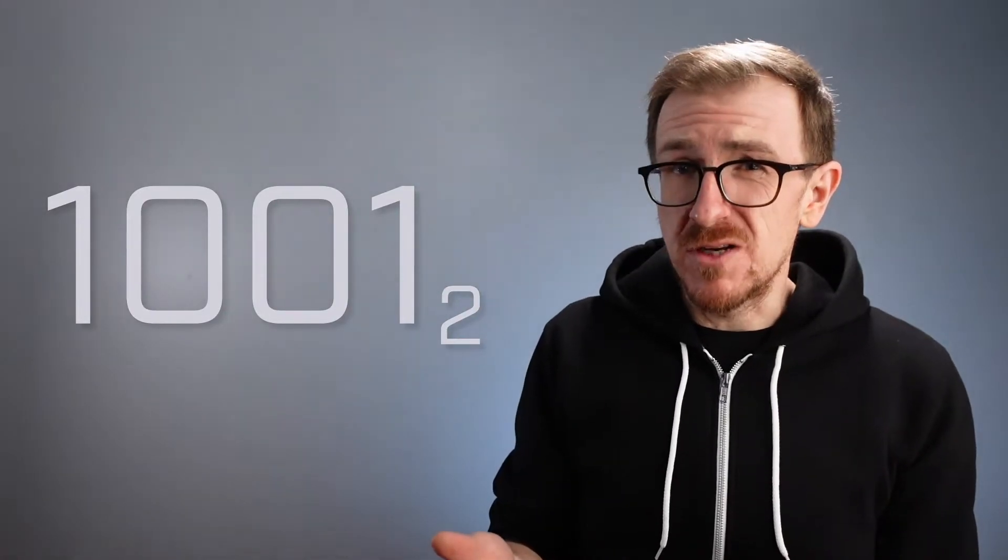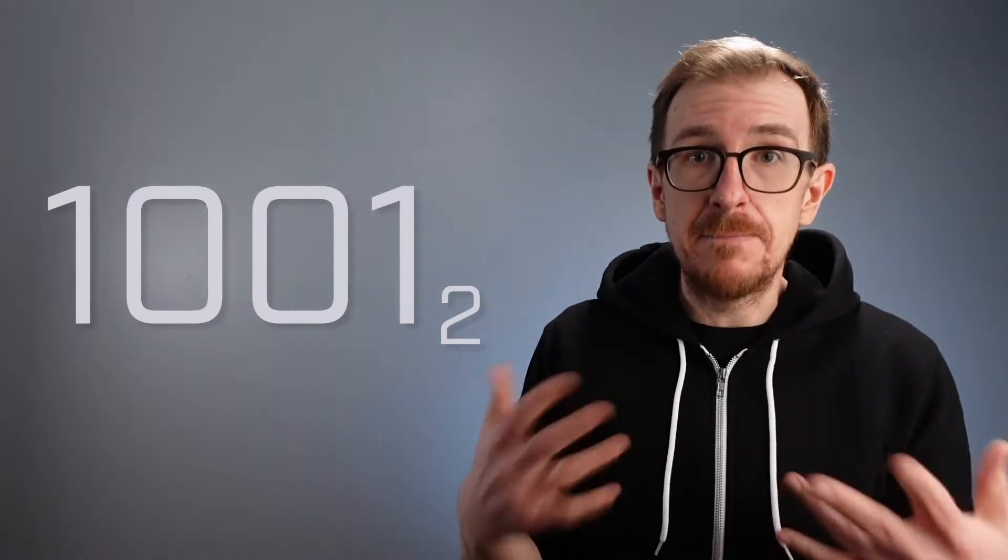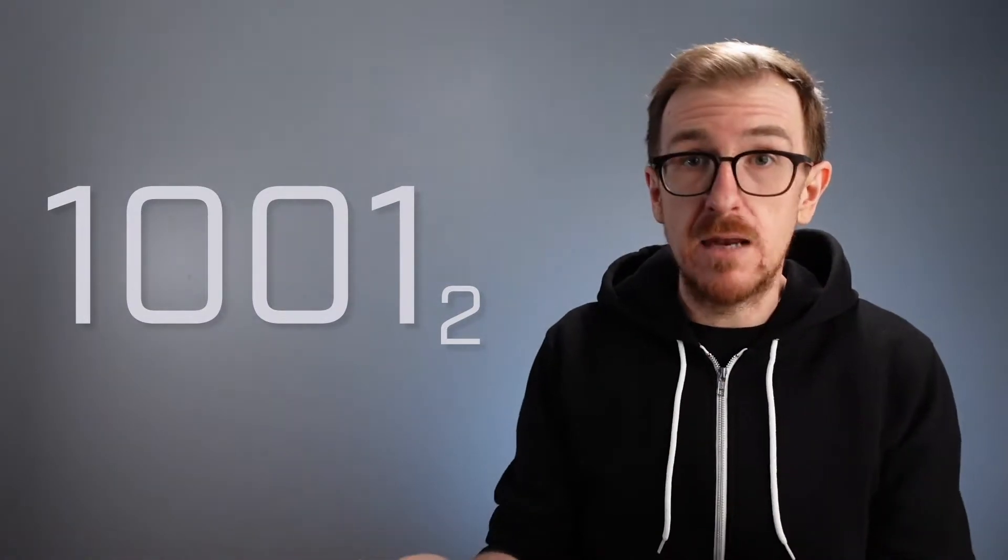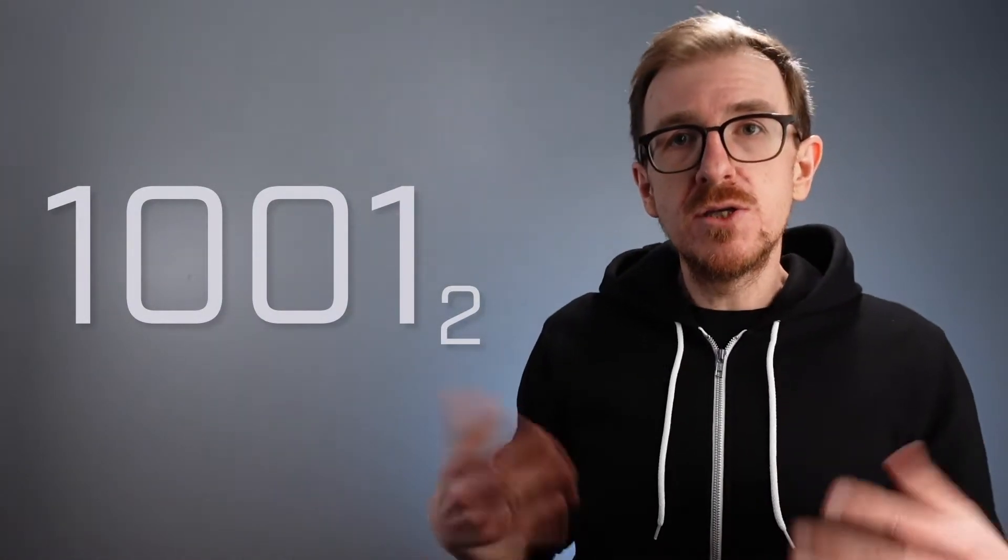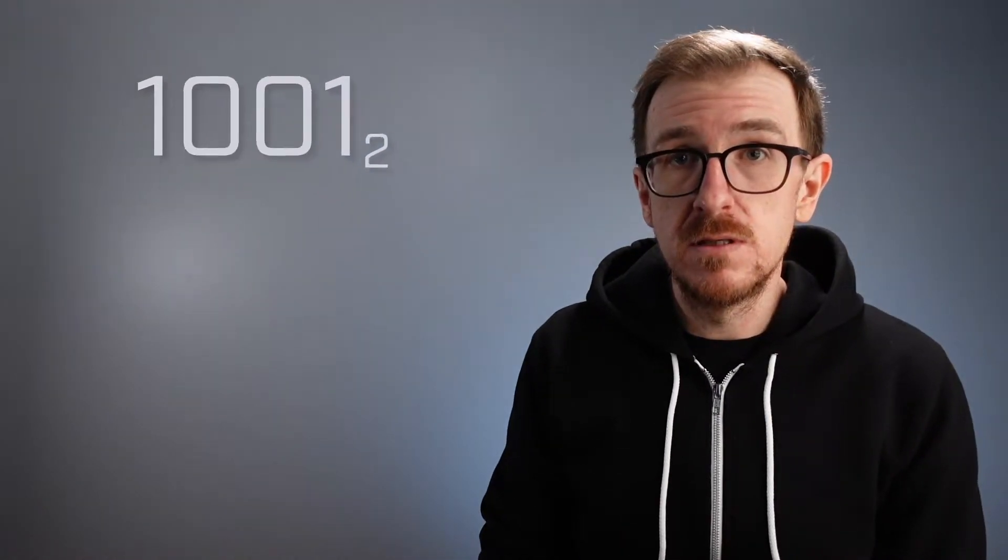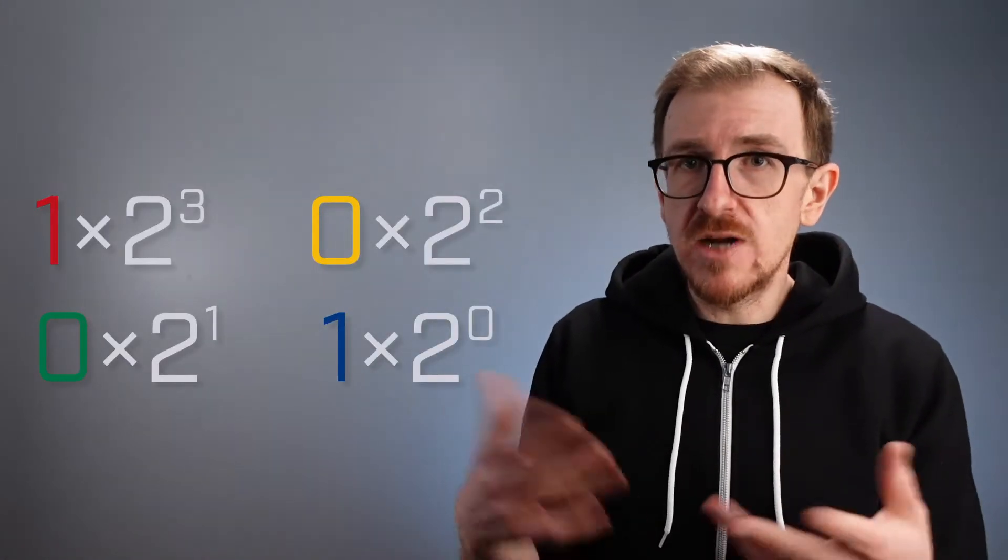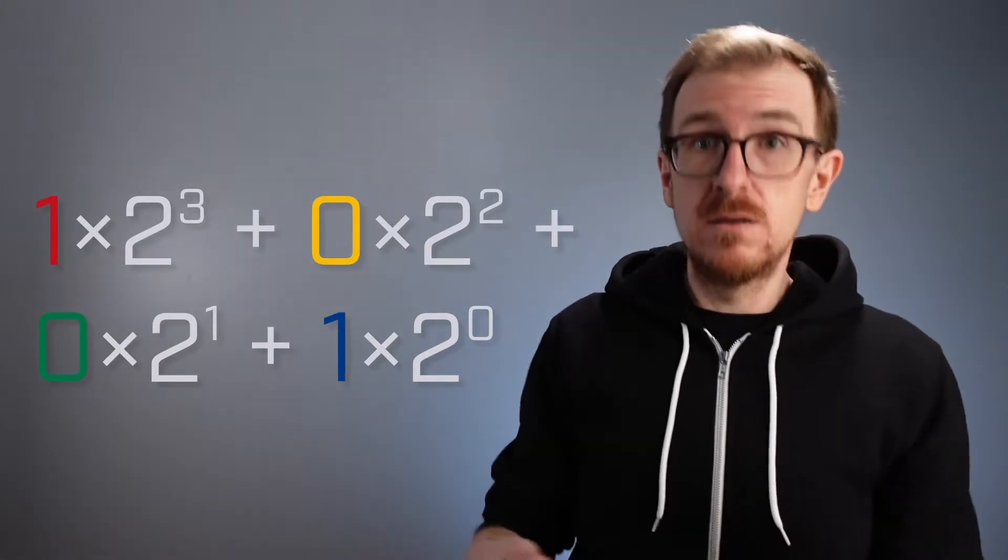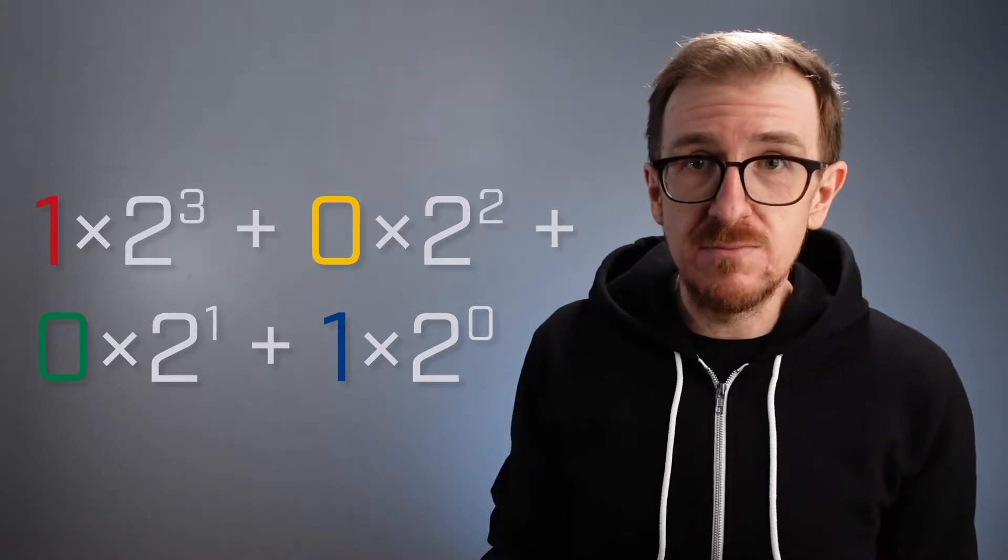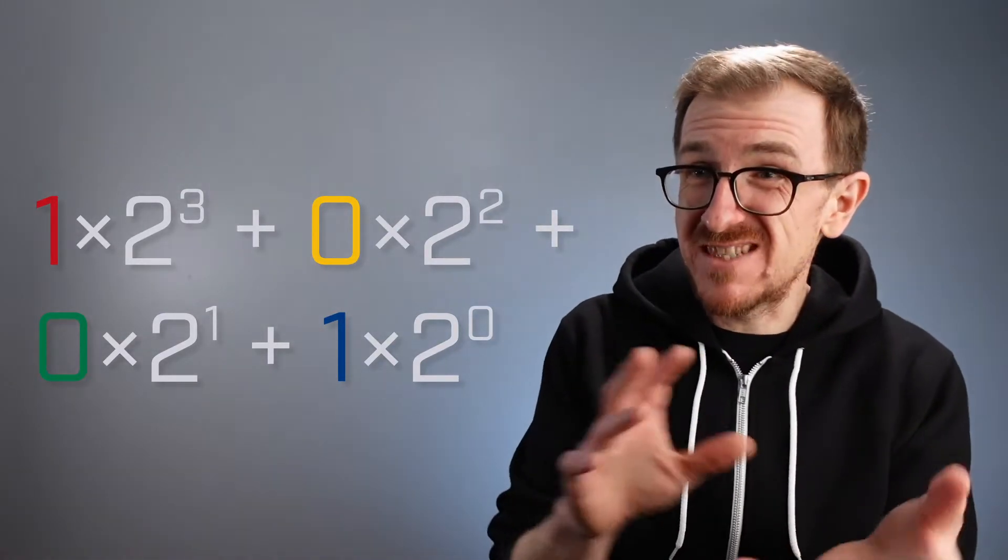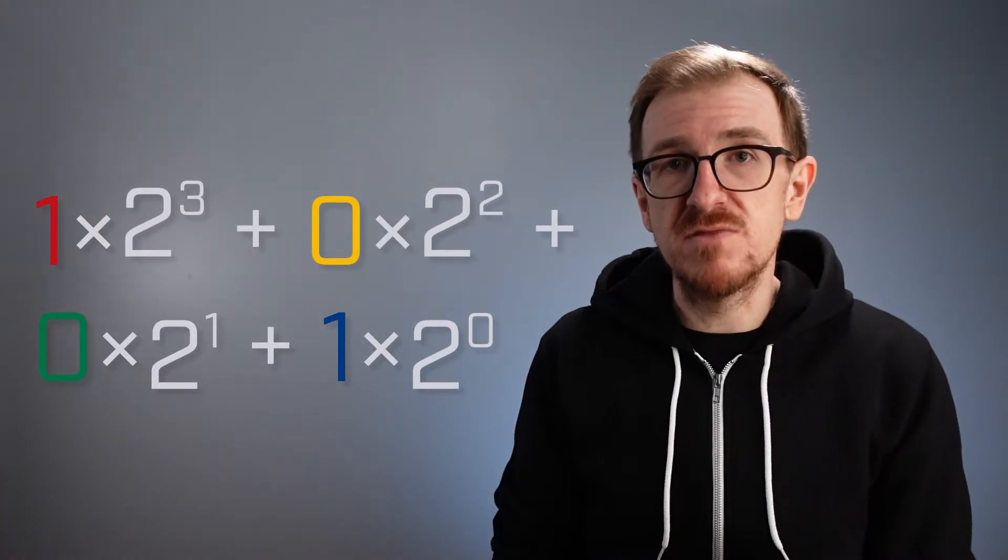Binary numbers are similar to decimal numbers, except that instead of being based on 10 and powers of 10, they're based on 2 and powers of 2. To see how it works, let's convert this binary number into decimal. Starting from the right, we multiply each of the digits by larger and larger powers of 2 and add the results together. This should all look pretty similar to what we did for decimal numbers, except that instead of having powers of 10, we have powers of 2.